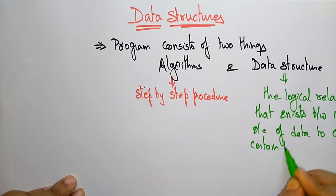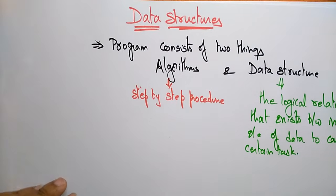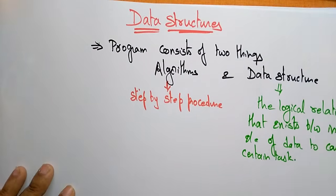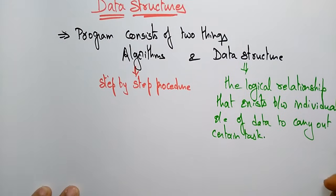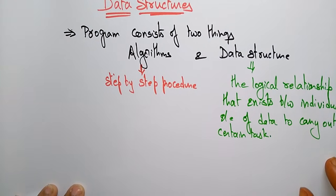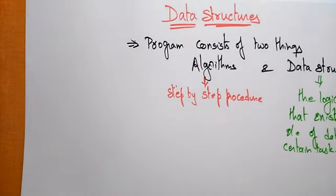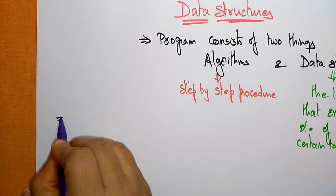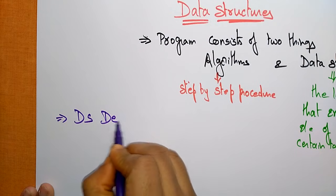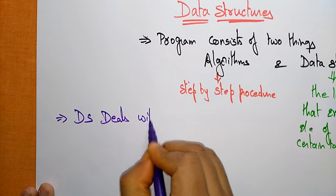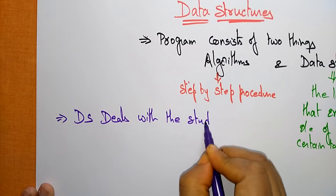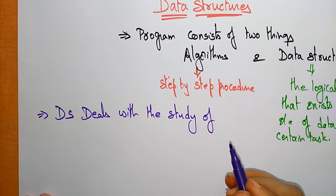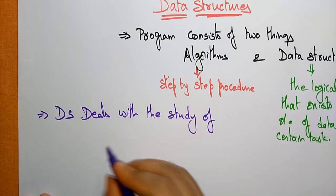A data structure is a logical relationship that exists between individual elements of data to carry out certain tasks. More clearly, a data structure deals with the study of how the data is organized.